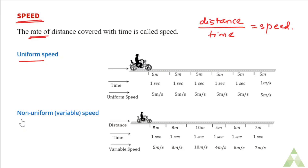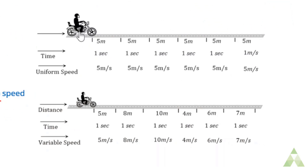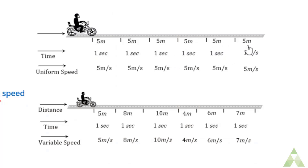Speed can be uniform or non-uniform, also called variable speed. Uniform speed means — for example, picture a motorcycle — in the first one second it covers 5 meters, so its speed is 5 meters per second. When an object moves so that its speed does not vary with time, covering the same distance in the same interval of time, that is uniform speed.